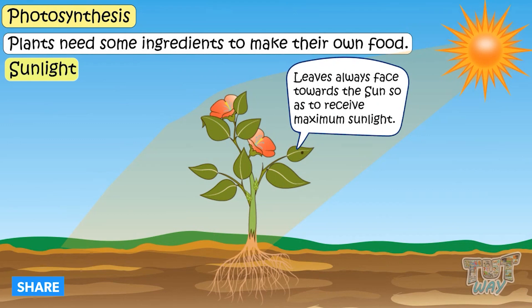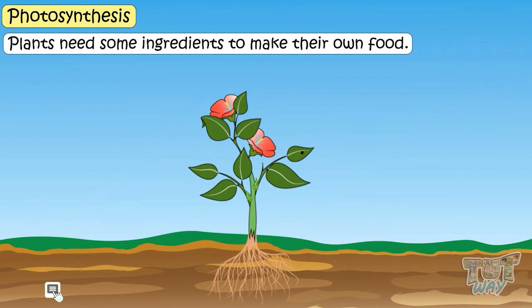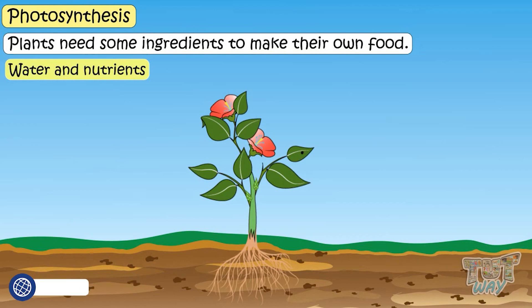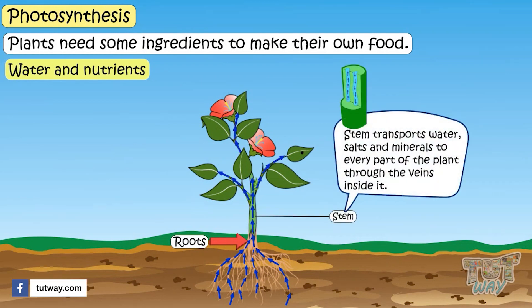Two, water and nutrients. Plants get water and nutrients from the soil. Roots absorb the water and nutrients from the soil, and the stem transports this water, salts, and minerals to every part of the plant through veins inside the stem.